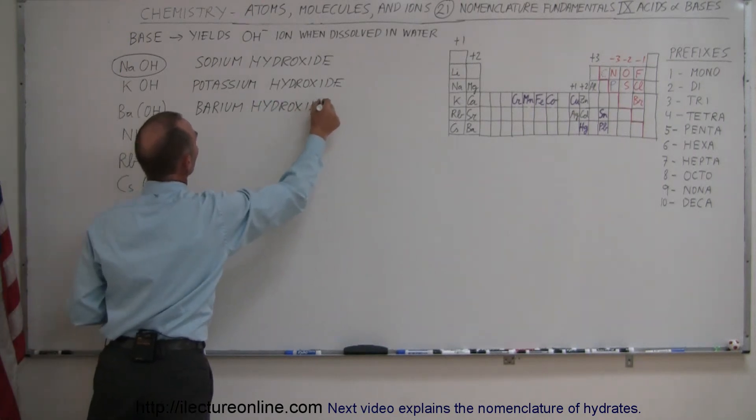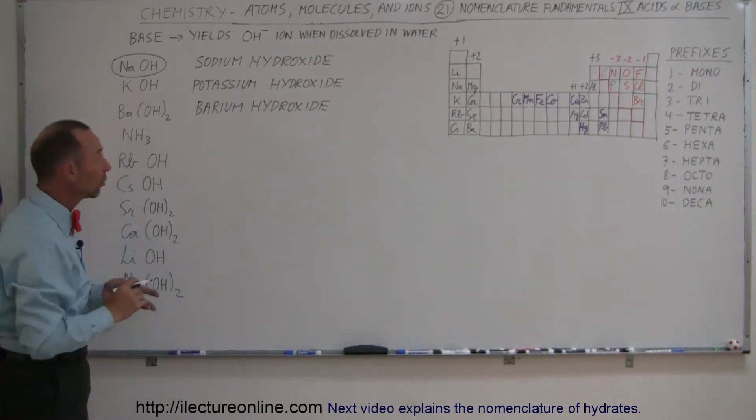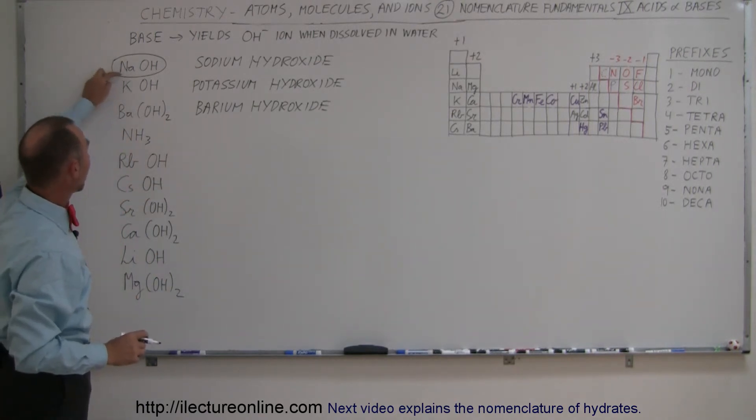Now you say, wait a minute, this has two hydroxide ions, this has one. Don't we need a different name for it? But notice these elements right here: sodium, potassium, barium, nitrogen, rubidium.